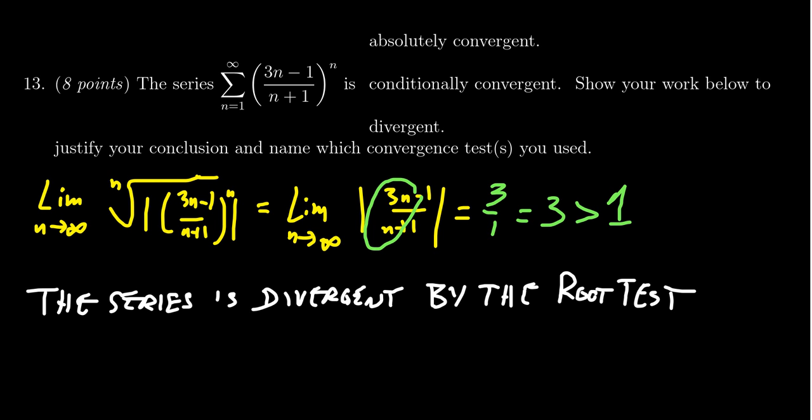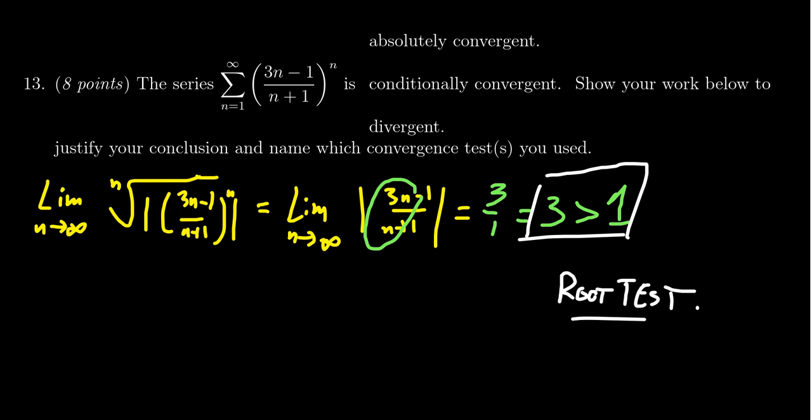And so that would be the answer we get if we use the root test as an approach. Now, admittedly, if you don't want it to be so wordy, that's okay. If you just said something like, oh look, we took the limit and the limit's greater than 1, cite the root test. If you just mentioned its name, that's okay. But then you should indicate that it's divergent.